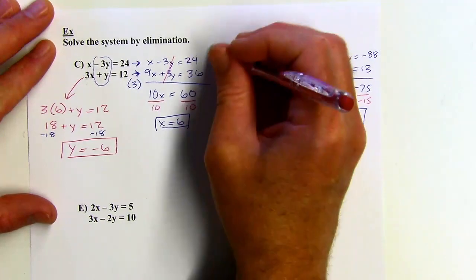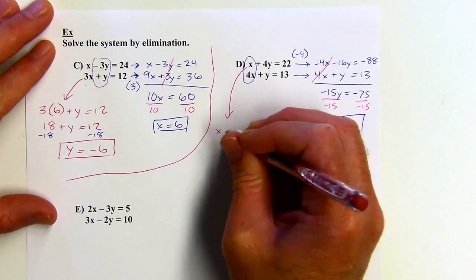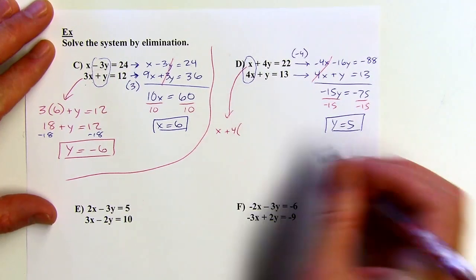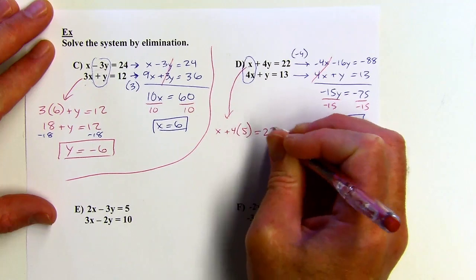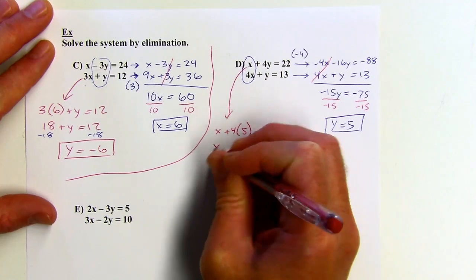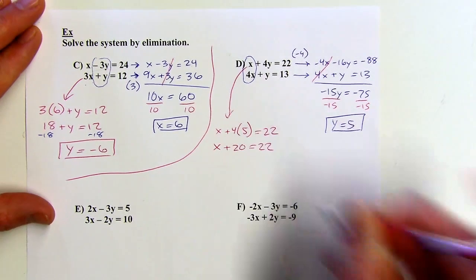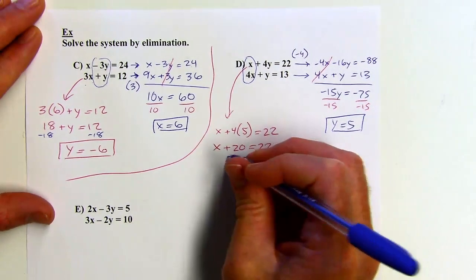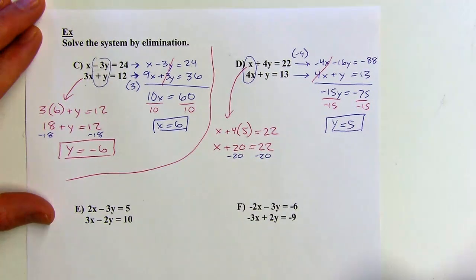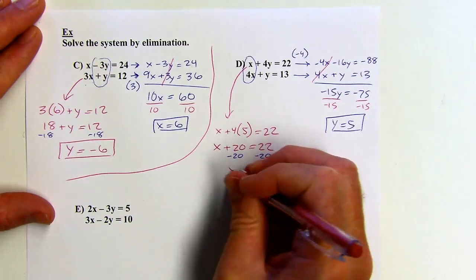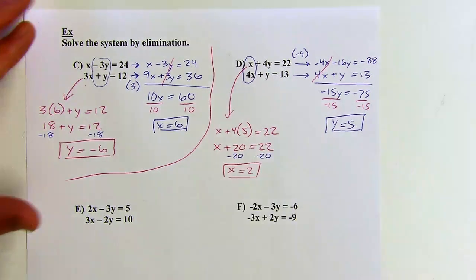The bottom equation I'm leaving alone, just rewriting it for the addition step. The x's are opposites, so those cancel. Negative 16y plus 1y is negative 15y, and negative 88 plus 13 is negative 75. Dividing by negative 15, y equals 5. Going back to the top original equation — since x is just 1x I won't need extra division — x plus 4 times 5 equals 22, so subtracting 20 from both sides gives x equals 2.